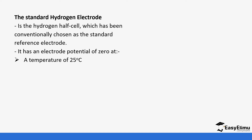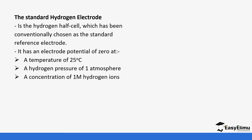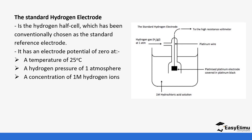The standard hydrogen electrode is measured at a temperature of 25 degrees Celsius, one atmosphere pressure, and a concentration of one molar. These are the standard conditions, which is why it is called the standard electrode potential.